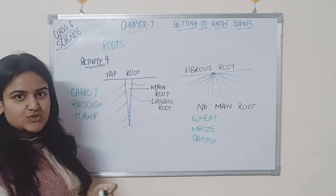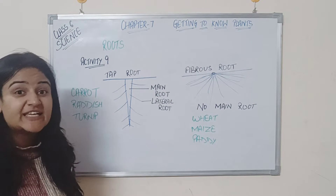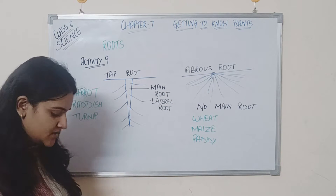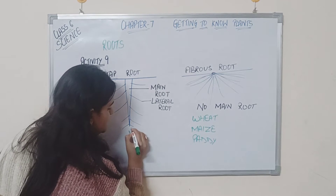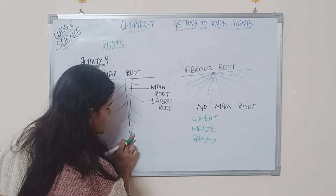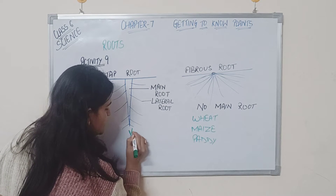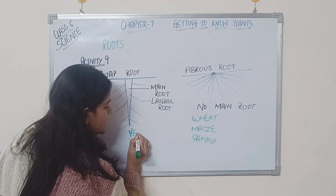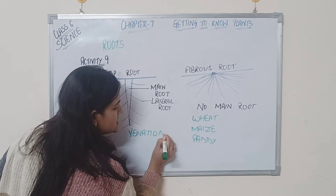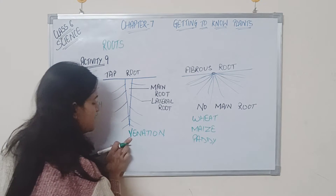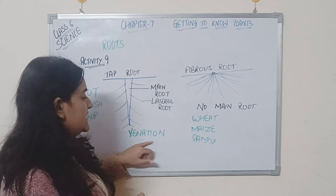Do you think this root system has any relation with the leaves? We have done one term that was venation. What was venation? Venation is basically the pattern of the veins in the leaves.